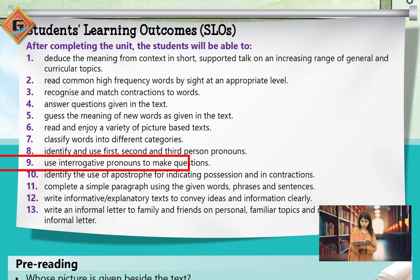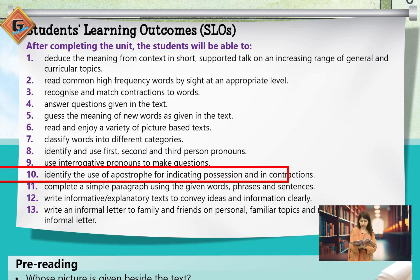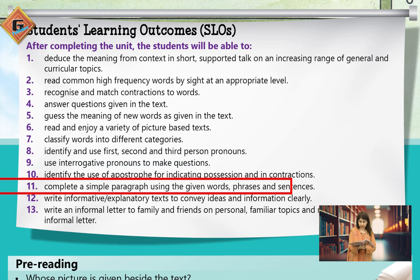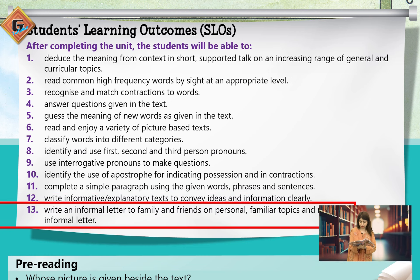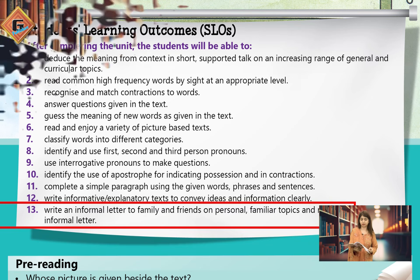Students will use interrogative pronouns to make questions, identify the use of the apostrophe for indicating possession and in contractions, complete a simple paragraph using given words, phrases, and sentences, write informative explanatory text to convey ideas and information clearly, and write an informal letter to family and friends on personal familiar topics, as well as reply to a short informal letter.